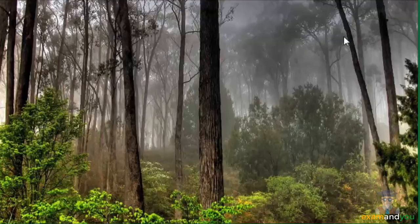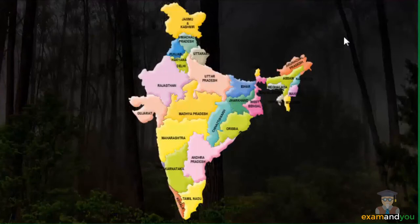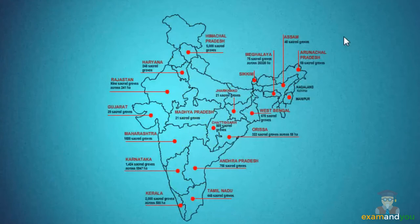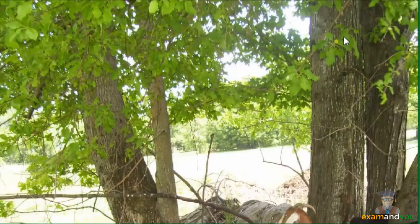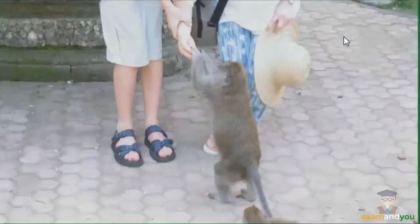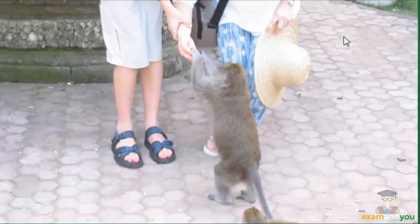The Peepal and Banyan trees are considered sacred in most parts of India. Thus, religious faith has led to the conservation of certain specific types of trees. In several parts of India, parts of forests or complete forests are protected by communities since they are considered to be abodes of gods and goddesses. Such protected forest areas are called sacred groves. Besides trees, some animals like monkeys are also considered sacred and fed at places of worship.